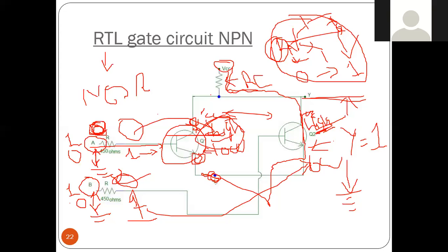In RTL logic, as I was discussing, whenever we apply 0 and 1, Q2 has low logic so current will flow through this and your output will be 0.